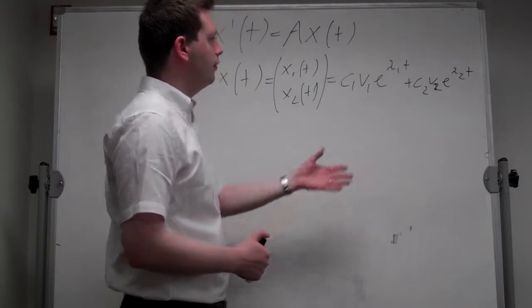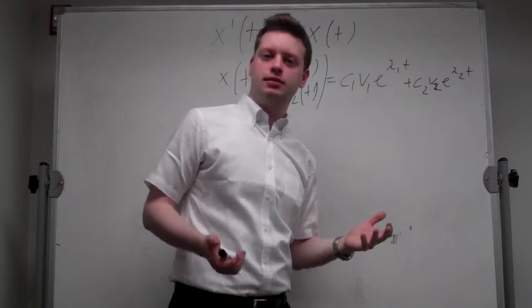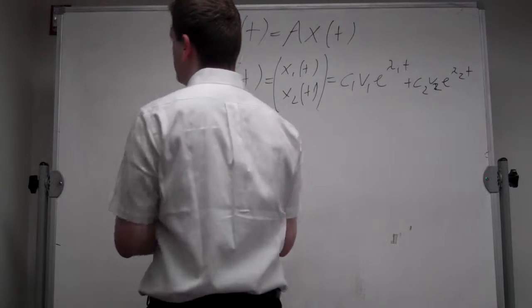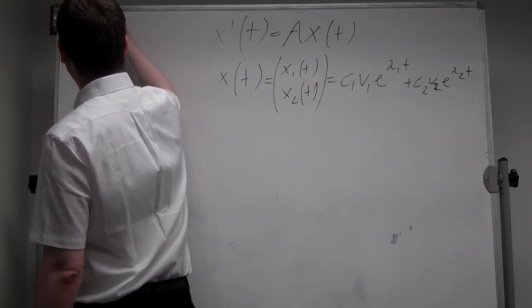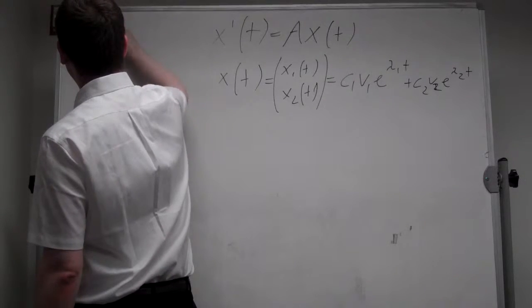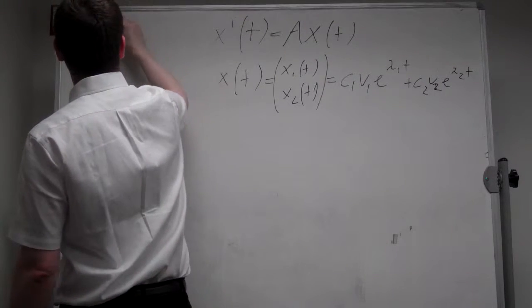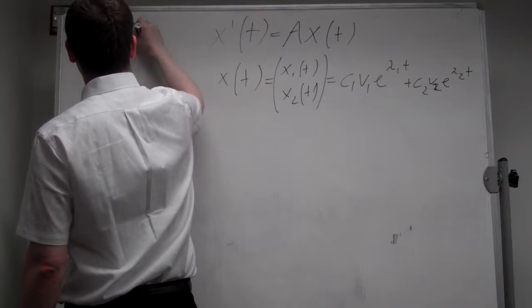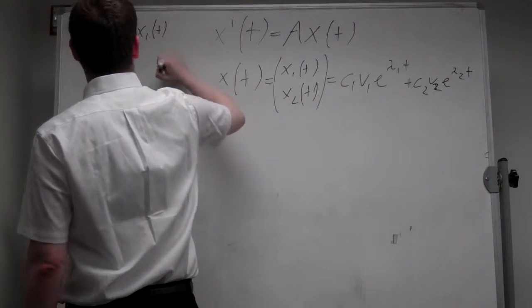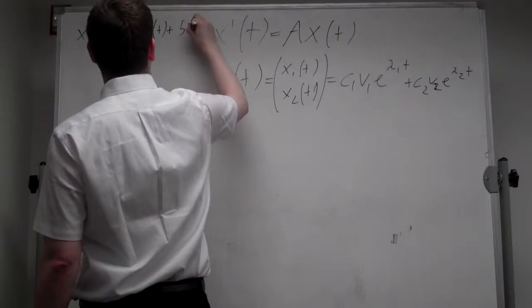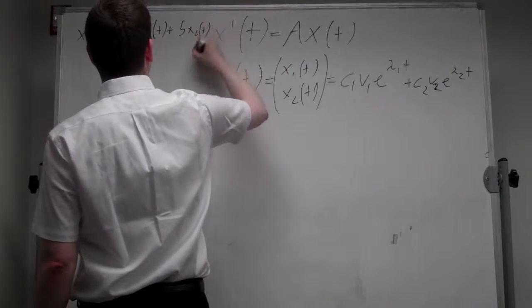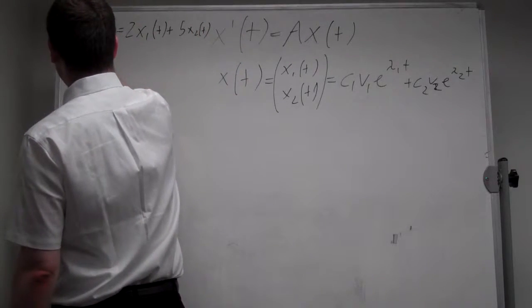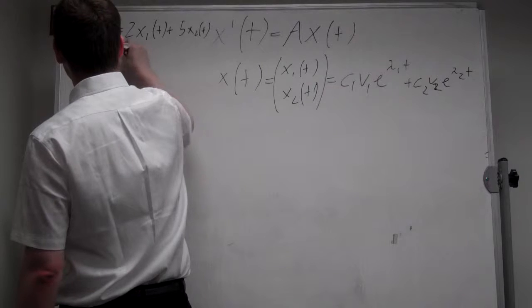Okay, now we have this formula, let's take a nice example. In particular, let's assume x1 prime t is equal to 2x1 t plus 5x2 t and x2 prime t is equal to x1 t plus 6x2 t.